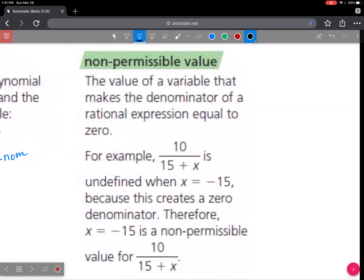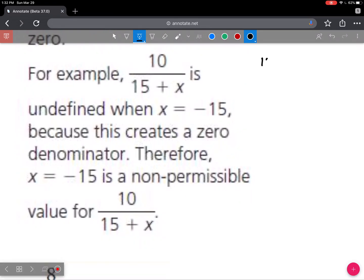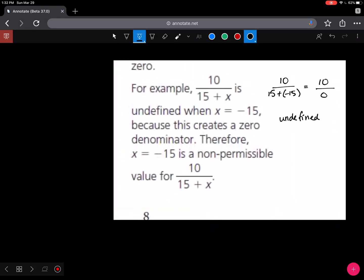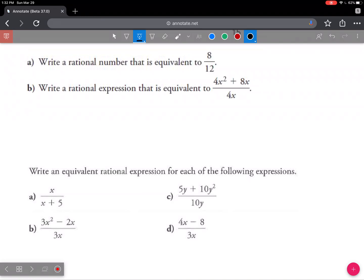The next definition is the non-permissible value, which we will abbreviate as NPV. It's basically the variable in the denominator that is not allowed. For example, in the example they give us here, if x happened to be minus 15, then you would end up with a situation where you were 10 divided by 0. Division by 0 is not permitted. They say it is undefined, in the sense that if you had 10 cookies and you wanted to divide them into 0 friends, it doesn't make any sense. So we've got to keep that idea in our heads moving forward throughout the whole unit.